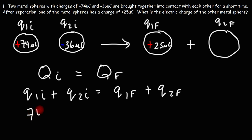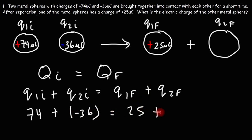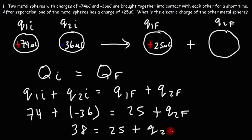Q1 initial is +74, Q2 initial is -36, and Q1 final is 25. Now we solve for Q2 final. 74 minus 36 equals 38. Subtracting 25 from both sides, 38 minus 25 is 13. So the electric charge on the other metal sphere is positive 13 microcoulombs.